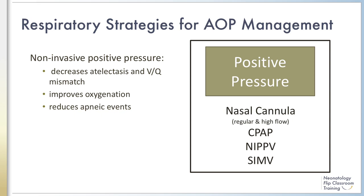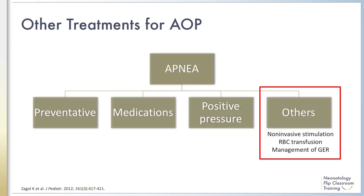If apnea leads to severe cardiorespiratory instability, intubation and mechanical ventilation may be required. Other reported therapies, both invasive and non-invasive, have been used to treat apnea of prematurity with varying success. Several non-invasive options thought to bolster CNS activity include olfactory stimulation, mechanosensory stimulation, and sound stimulation in the form of music.